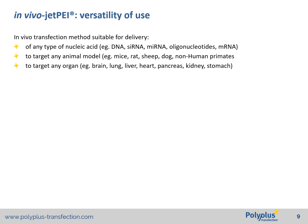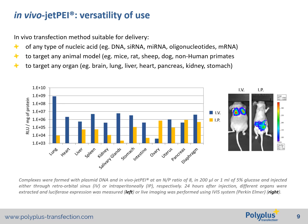In vivo-jetPEI is suitable for delivery of any type of nucleic acid, to target any animal model — common ones such as mice and rats, to more exotic ones such as rabbits, fish, flies, ants, and many others — and to target any organ. Again, there is a lack of specific tropism. As shown, even when the delivery is systemic, the administration route can already dictate the organs to which the nucleic acid will be more or less delivered.